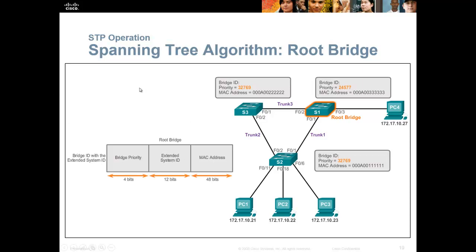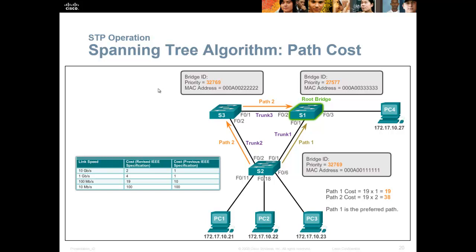Path cost: from the root bridge, spanning tree assigns a cost to each path based on the speed of the link. 10 gigabit has a cost of 2, 1 gigabit has a cost of 4, 100 megabits has a cost of 19, and 10 megabits has a cost of 100. It adds up the cost of all links along a path and uses the lowest-cost path, similar to how OSPF works — it creates a master, assigns costs from the master's point of view, and uses the lowest cost path to reach destinations.